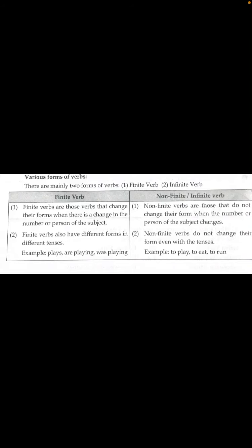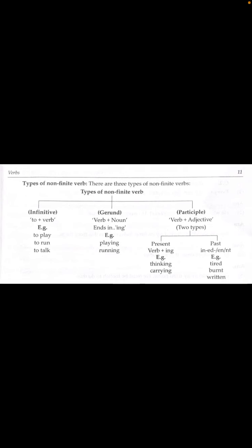Non-finite or infinite verbs are divided into three types. First is infinitive: to + verb. 'To' is placed before the basic verb, which remains unchanged — for example, to play, to run, to talk.